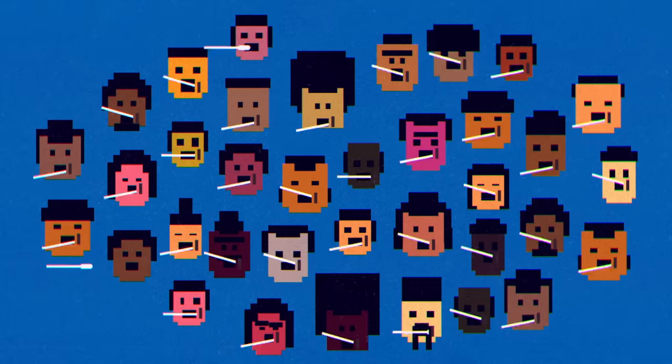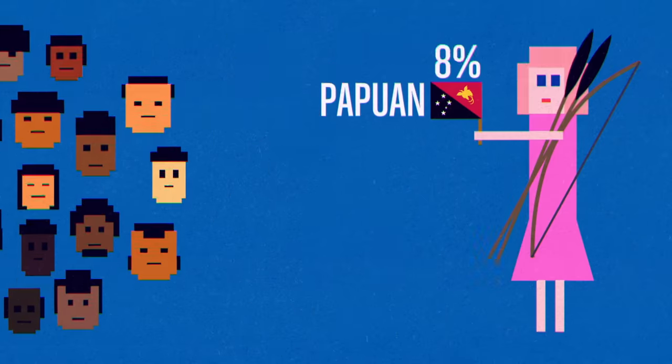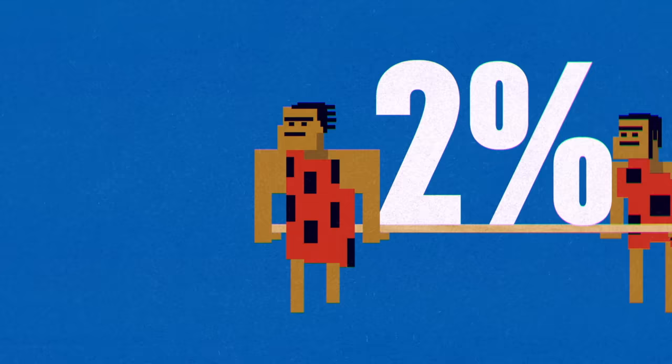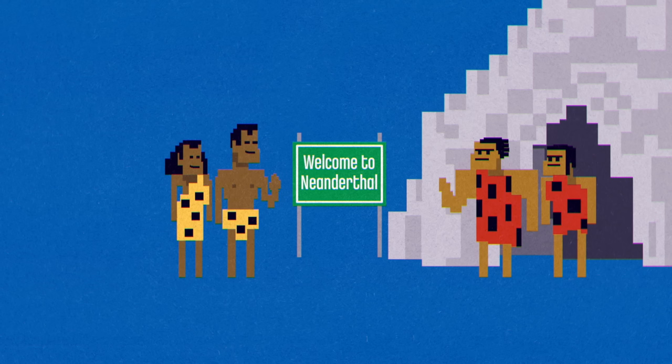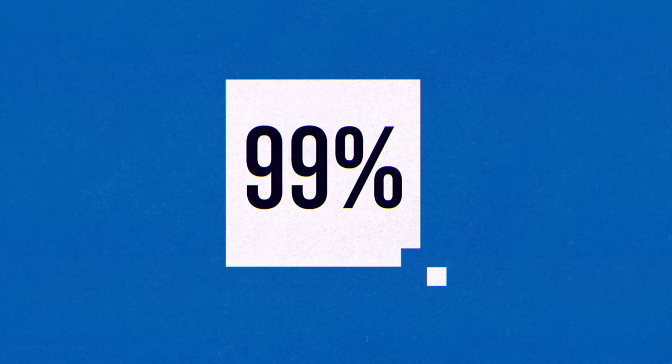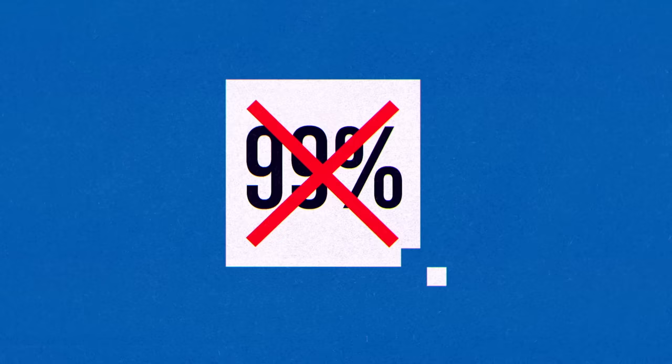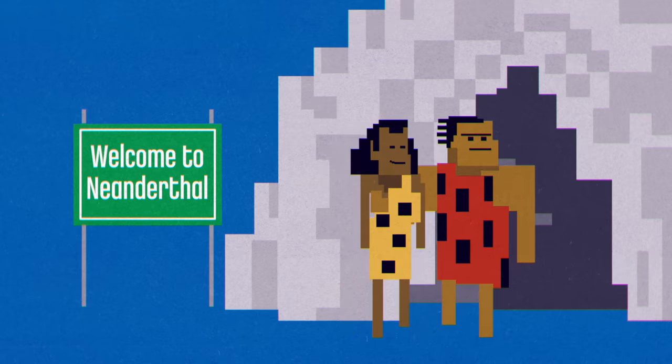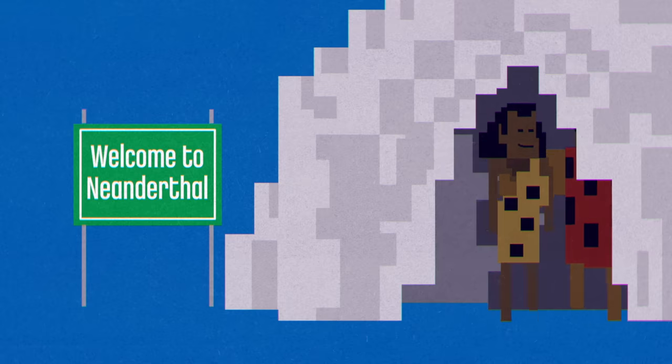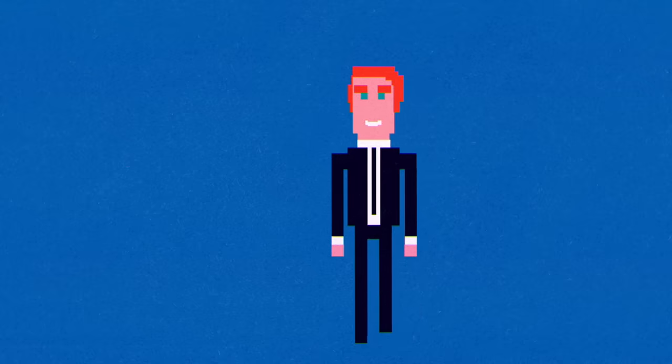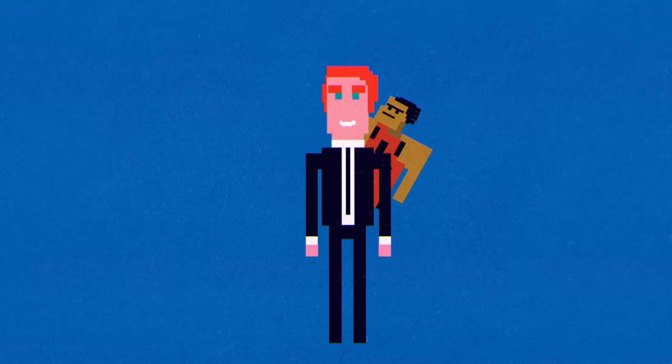And as more people get sequenced, your results might change. Looking further back, you may get a result like 2% Neanderthal. Though Neanderthals were a separate species from humans, that 2% doesn't come out of the 99% of our genome shared among all humans, but the 1% that varies. That's because about 40,000 years ago, certain human populations interbred with Neanderthals, meaning some people alive today have Neanderthal ancestors.